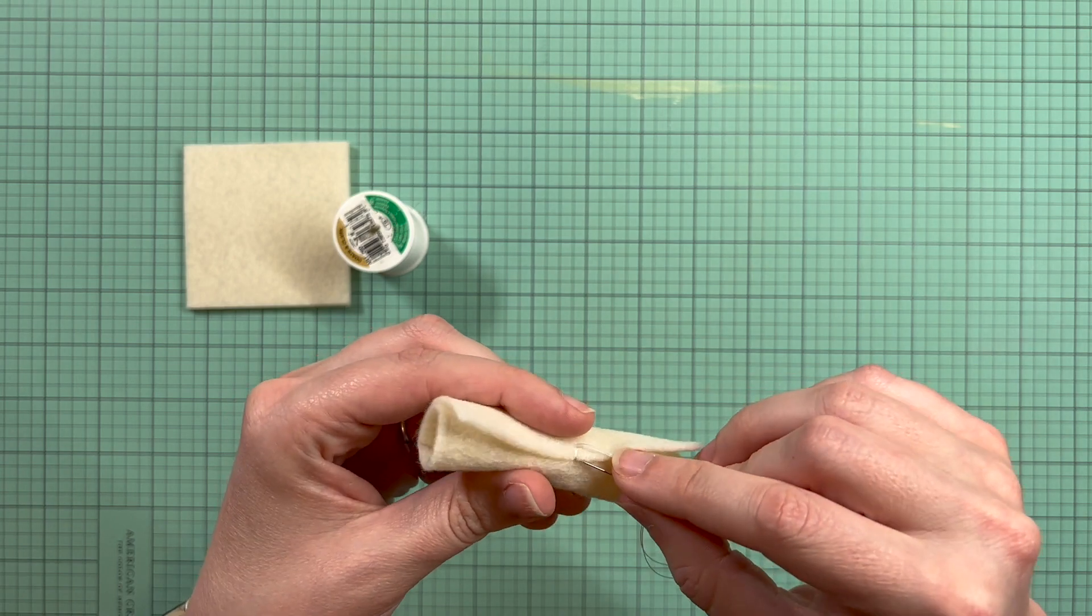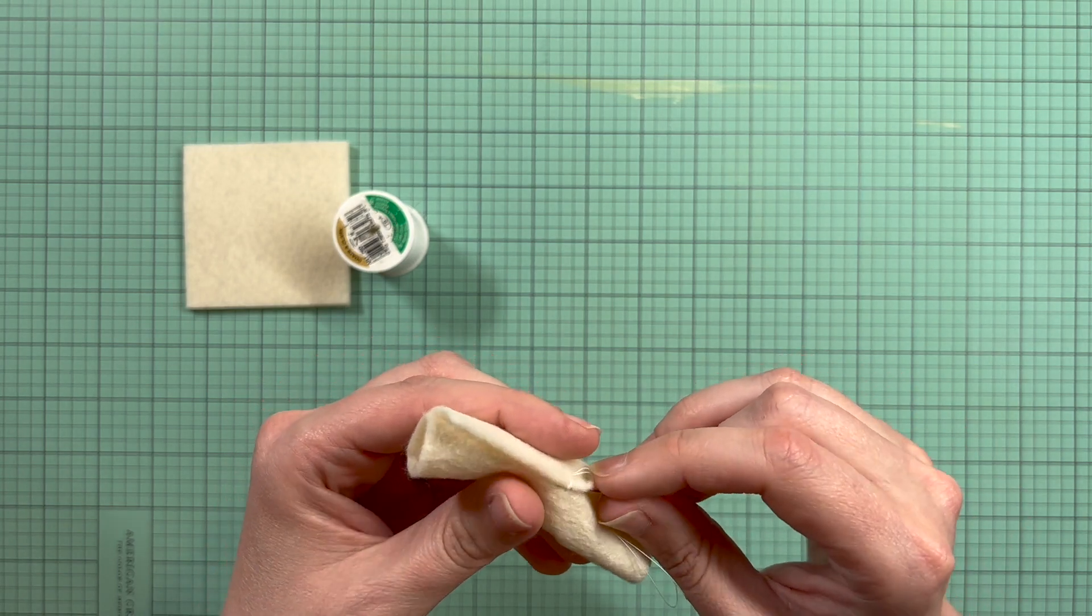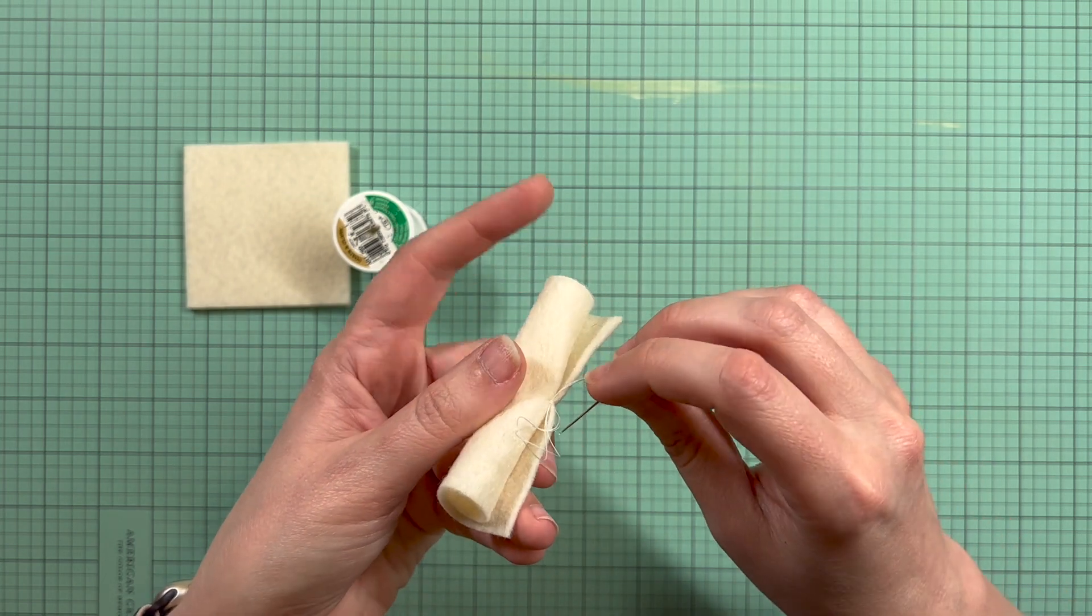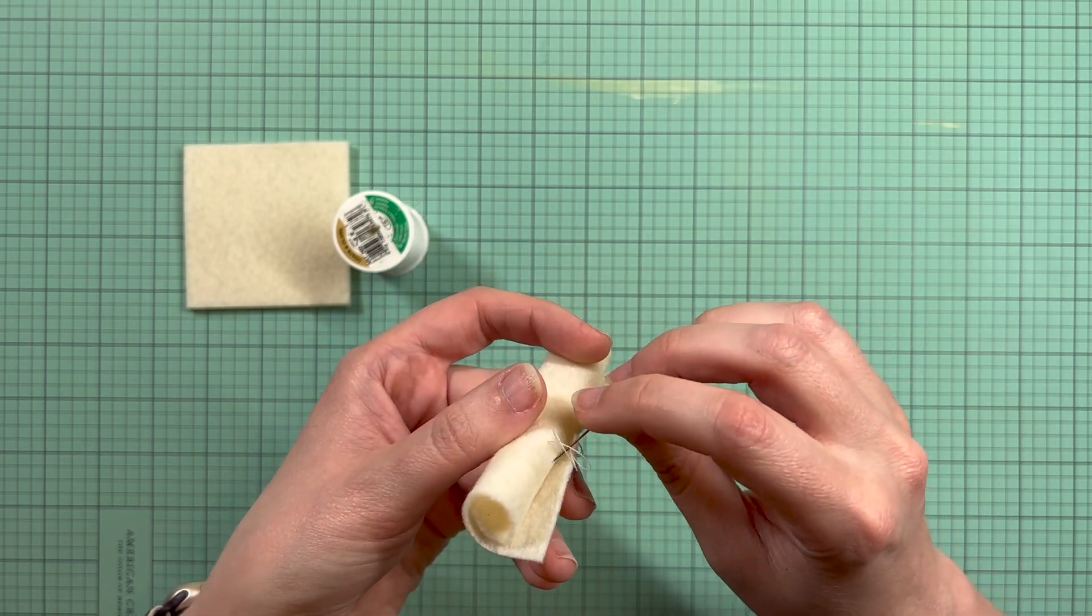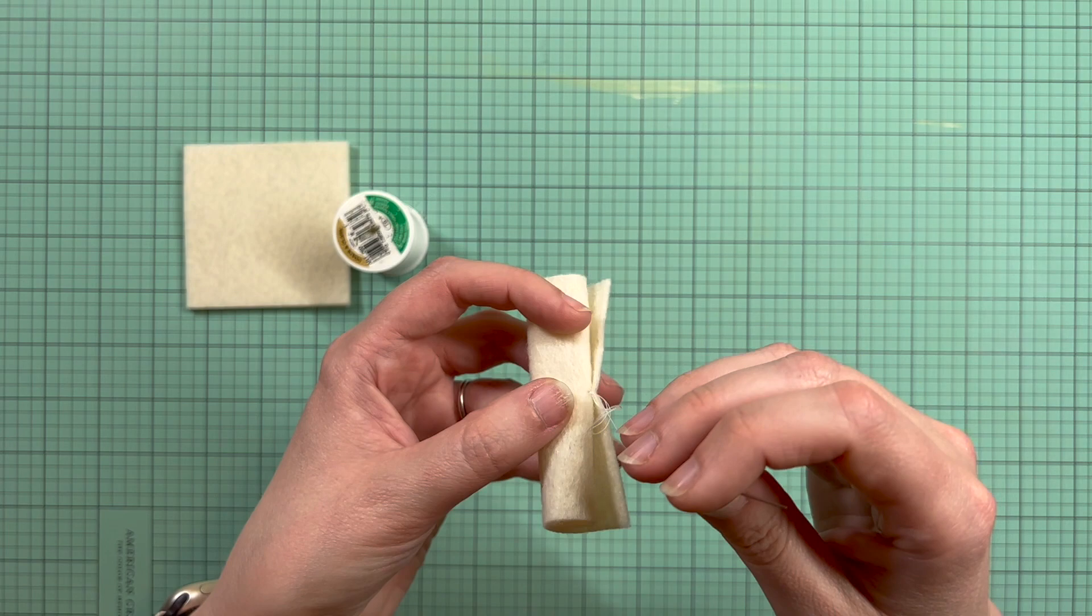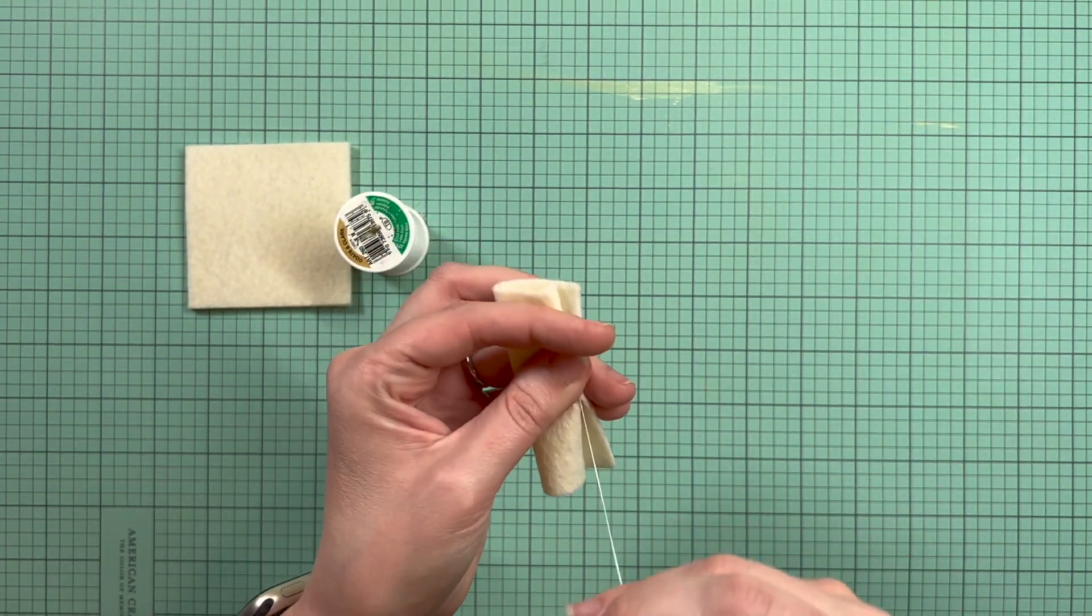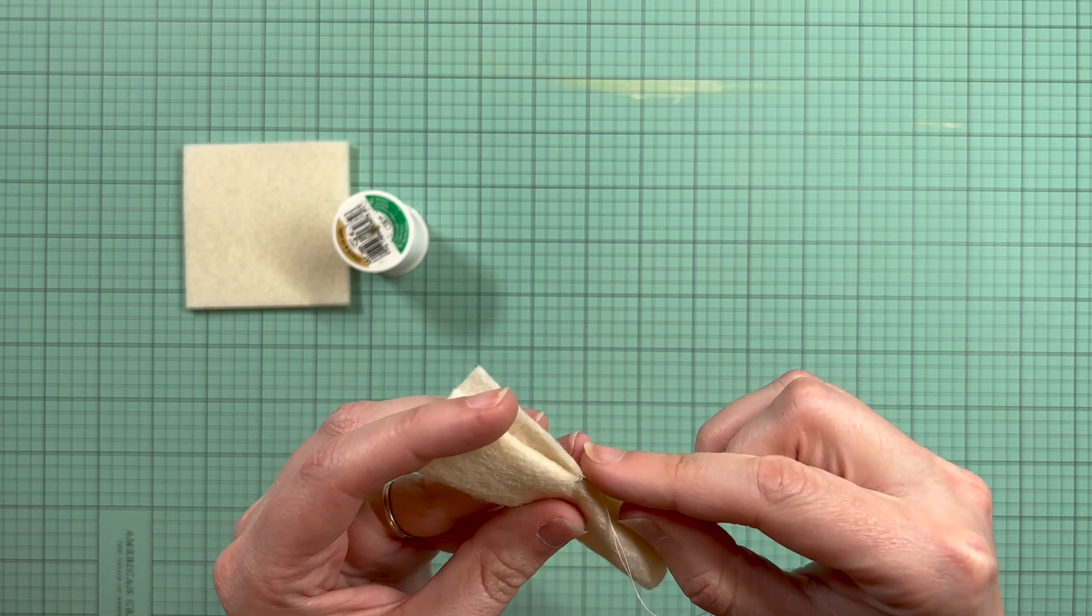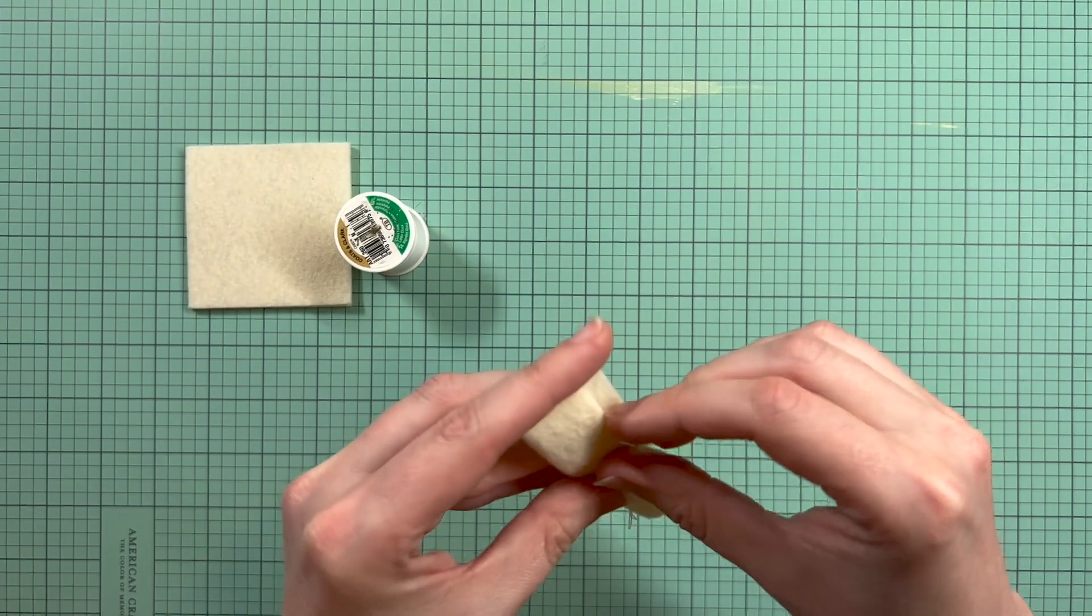And then to tie a knot, you just put your needle underneath the stitches you've already made, pull it through, make sure you leave a loop, enough of a loop here to put your needle through that loop and then pull it tight. I'm going to do two knots just to keep it nice and secure.